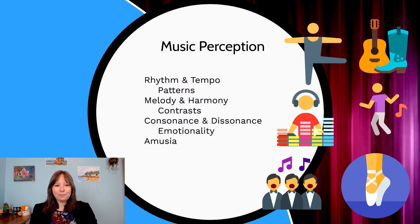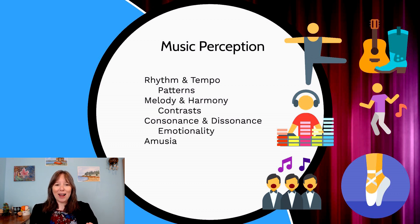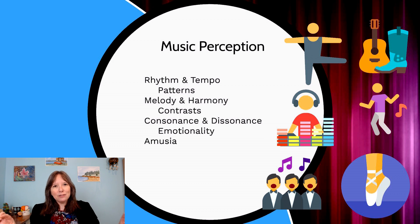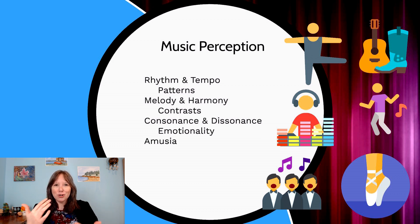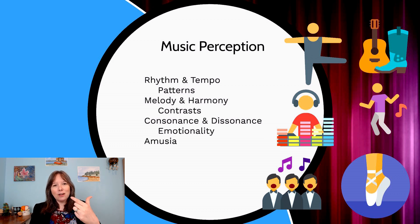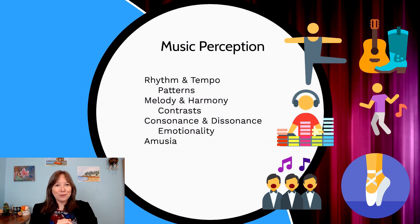Then we have melody and harmony, which can be parallels to contrast in light. Melody is really considered the horizontal contrast and harmony is the vertical contrast. One way to explain it: melody is whether the notes feel expected or largely contrasting and unexpected. Harmony is more vertical — think of a quartet of singers performing in different octaves that layer upon each other nicely. Those are the different contrasts in music.